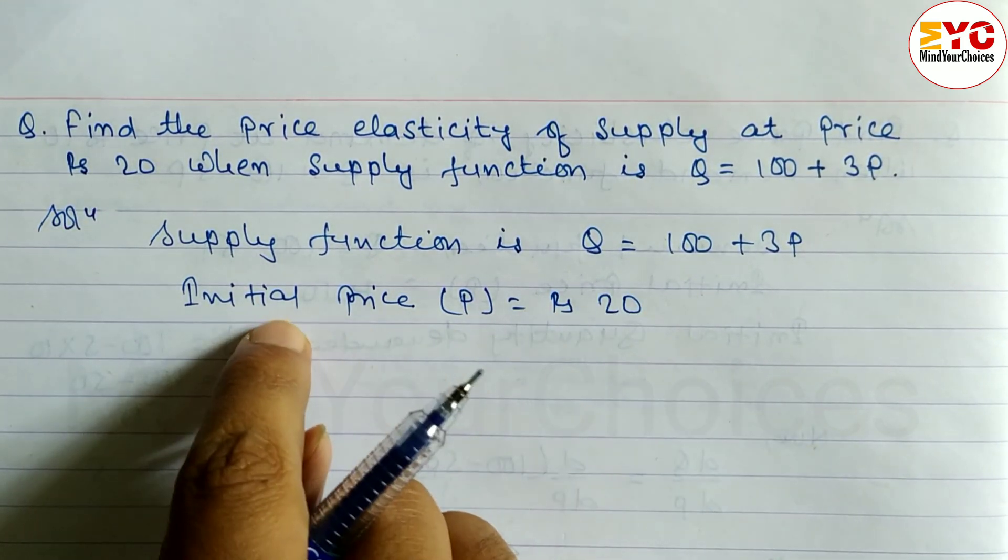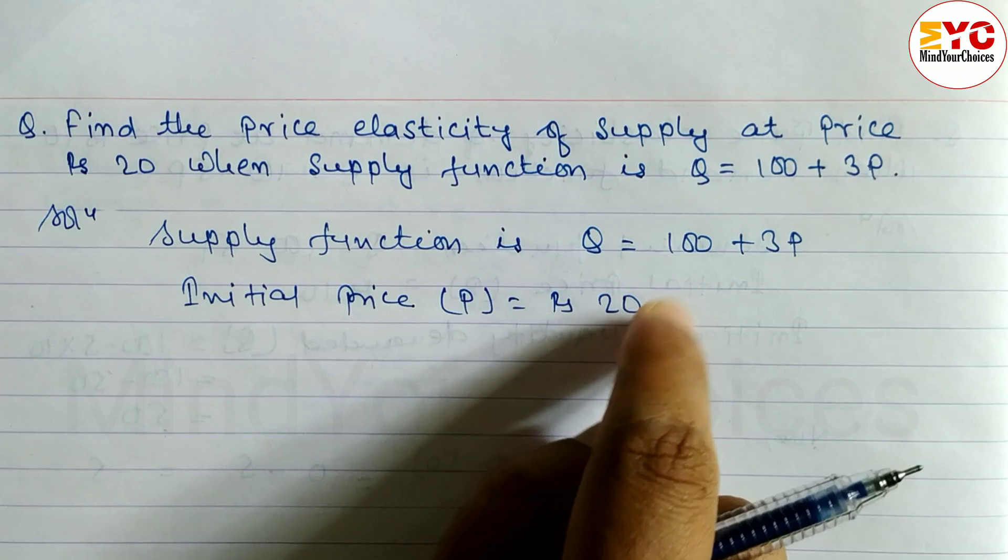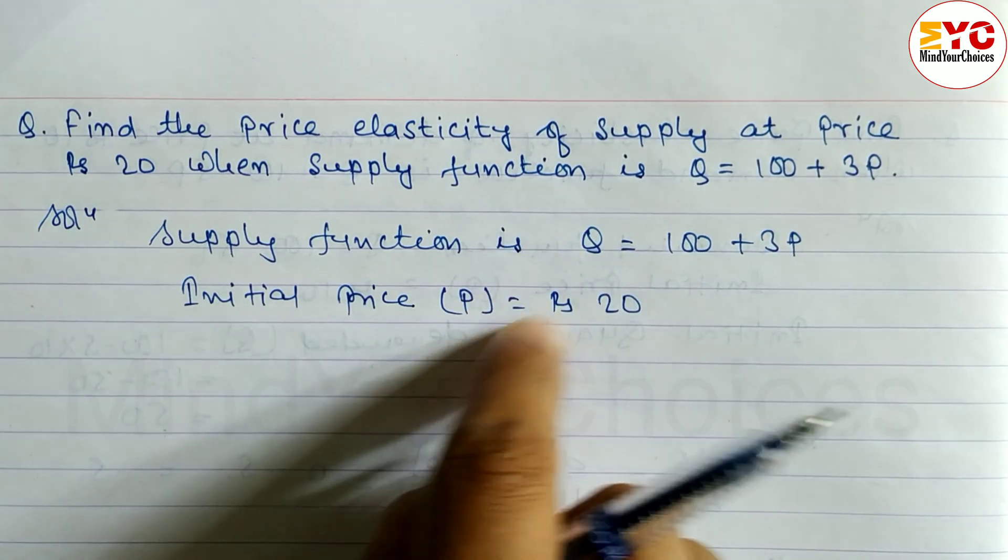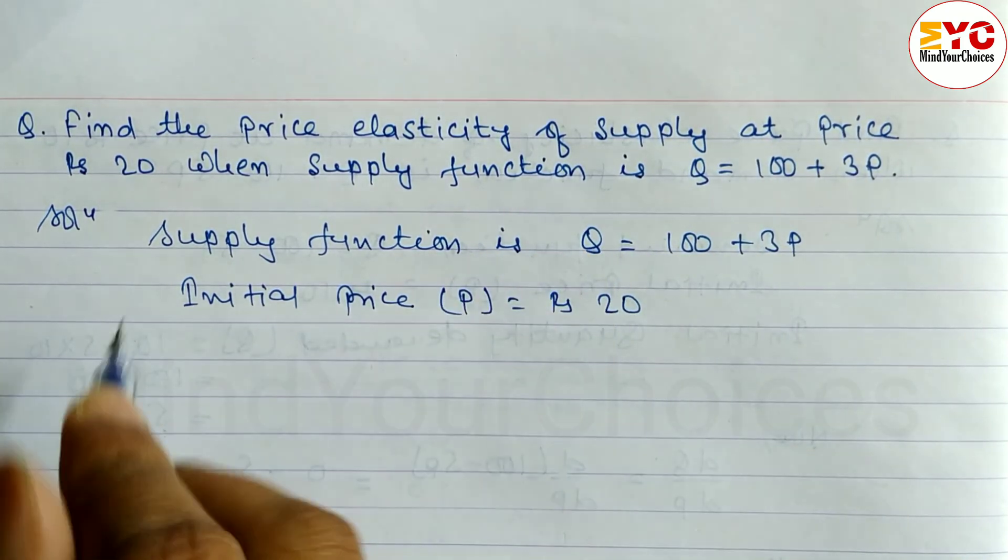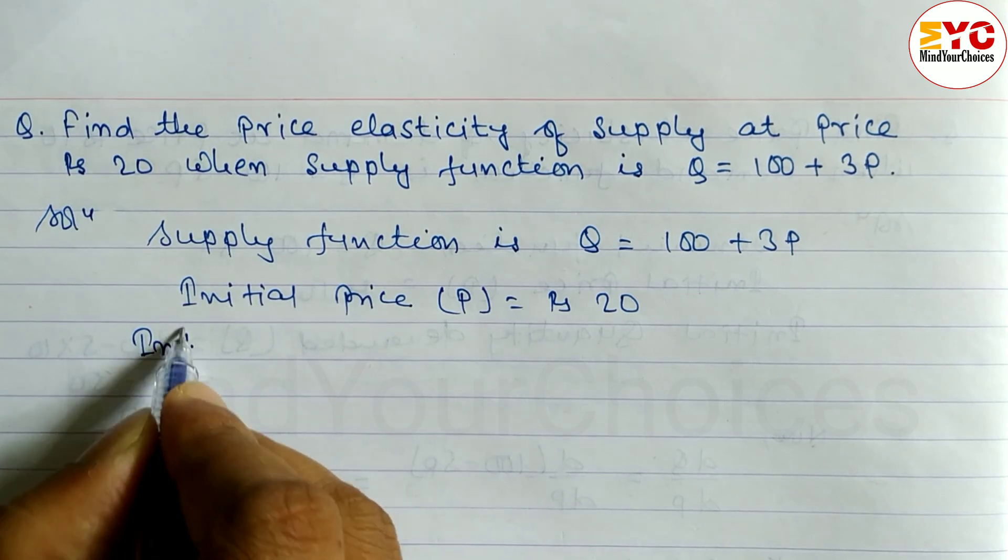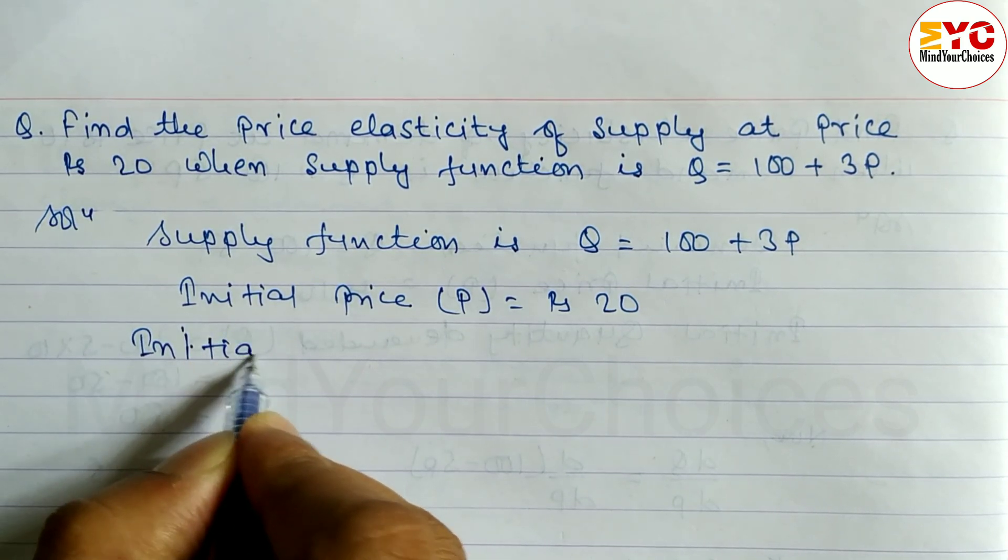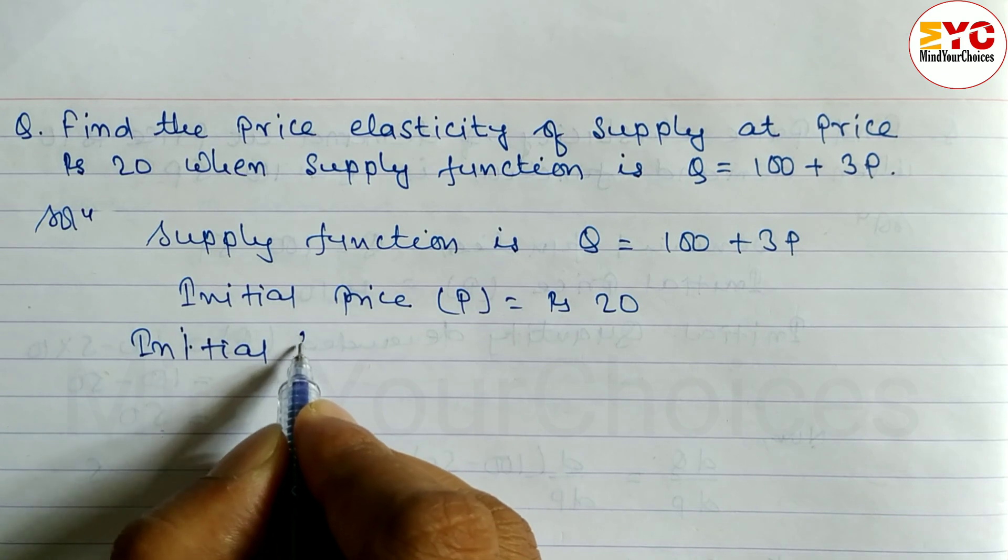Now, initial supply is equal to... we can write here initial quantity supply Q equals 100 plus 3 times 20 equals 100 plus 60 equals 160.